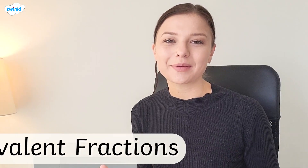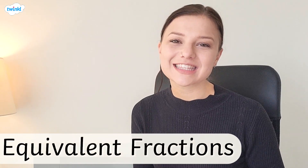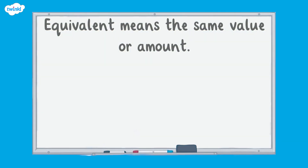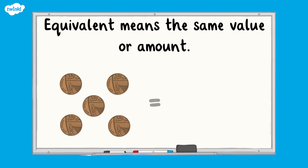This video is here to help you with equivalent fractions. Let's see how we can identify and write equivalent fractions. Equivalent means the same value or amount. For example, five one-pence coins are equivalent to one five-pence coin. We use the equals symbol to mean 'is equivalent to'.